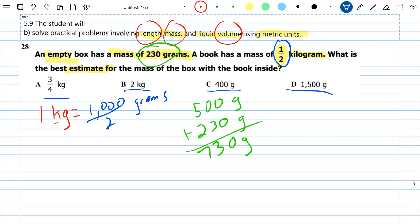1,500 grams. It's way too big. I've got to be around 730. So you're gone. 400 grams. Too small.